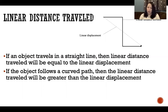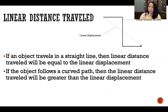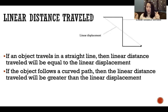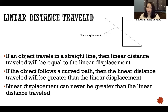If the object follows a curved path, then the linear distance traveled will be greater than the linear displacement. Maybe I ended up one mile east of my house — that's the linear displacement — but I took a three-mile curved path to get there. Whenever the path is curved, the linear distance traveled will always be greater than the linear displacement, because linear displacement is the most direct straight line between the starting and ending position. Linear displacement can never be greater than the linear distance traveled.